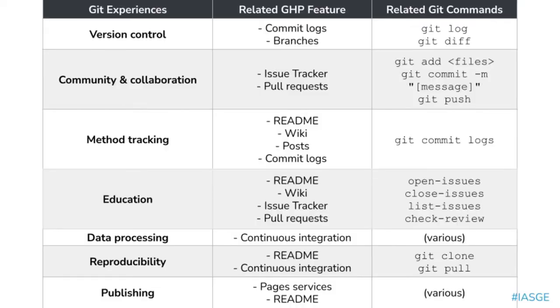These scholarly ephemera include things like branches and commit logs for version control, issue trackers — those discussion boards mixed with to-do lists — pull requests, when collaborators from outside your project want to contribute code, wikis, and lots of documentation features. All of these contribute to a rich body of scholarship that takes place both in the Git data format and on Git hosting platforms.